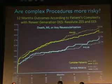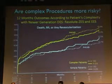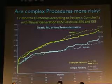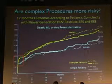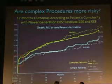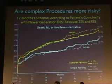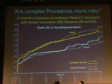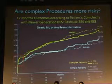When you look at the Resolute All-Commerce study and compare simple lesions against complex lesions — the white lines are simple lesions, the yellow lines are complex lesions — you can see that death, MI, and revascularization from any indication is higher in complex lesions. Most of these differences happen right at the beginning, actually in the cath lab. So if you can do something in the cath lab to make complex lesions simple, you could eliminate the separation between those two lines.